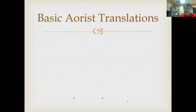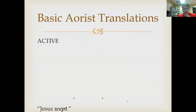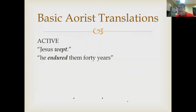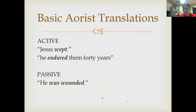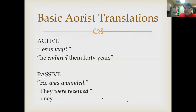Basic aorist translations: 'Jesus wept' — it happened. 'He endured them 40 years' — he endured them. Notice this isn't instantaneous, so aorist doesn't mean instantaneous. Passive: 'he was wounded for our transgressions,' 'they were received.' You can see how the active means the subject does the verb, while the passive means the subject is done by the verb.